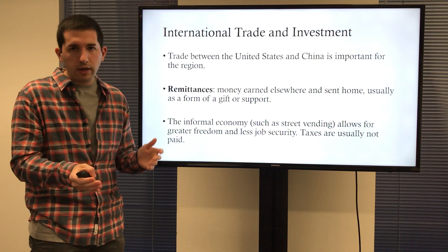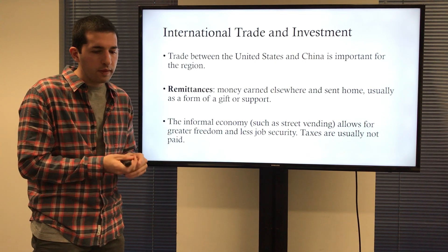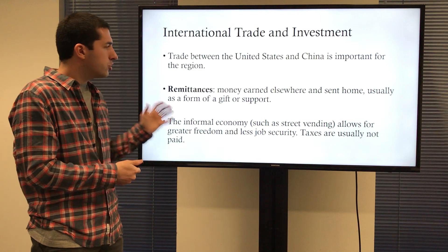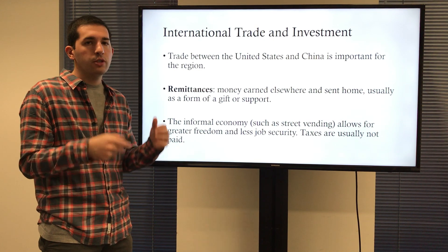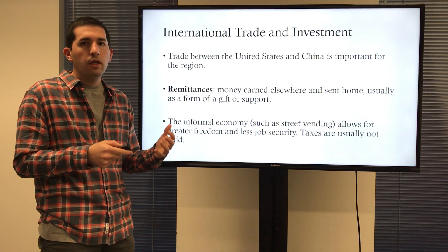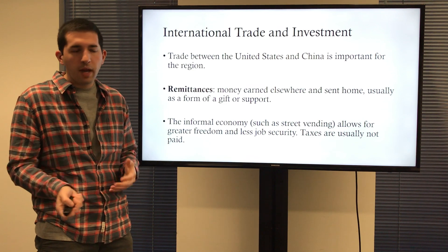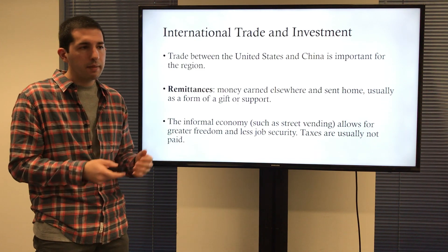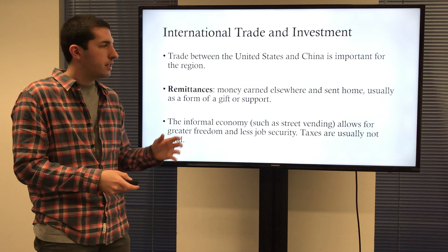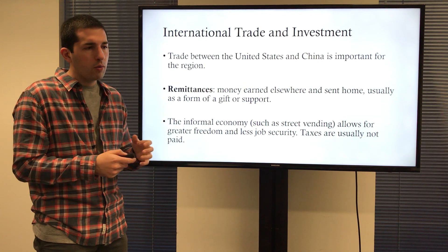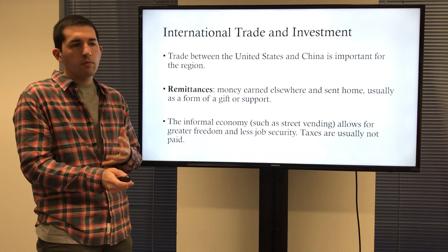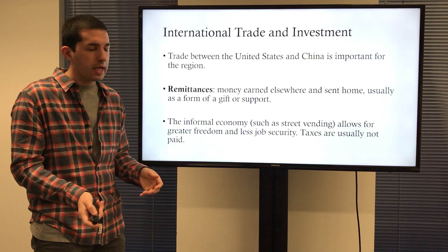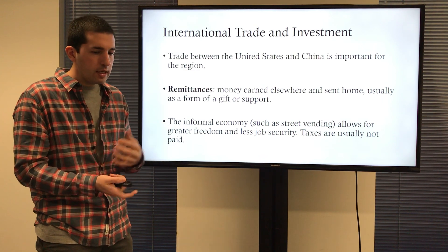Remittances are something not within international trade or investment, but important as money earned elsewhere and sent home — not necessarily from one country to another, but from one area to another, usually as a form of gift or support. Remittances take place from maquiladoras, which are manufacturing plants in Mexico where family members work and send money home, or folks coming from Mexico to work in the United States and sending back remittances. The amounts of money transferred this way rival our entire foreign aid to a region or particular country.